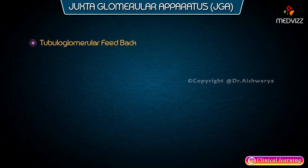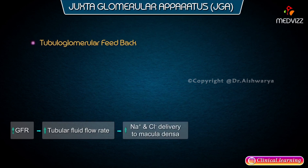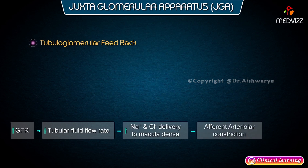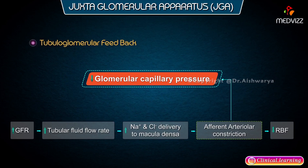Tubuloglomerular feedback: an increase in GFR causes increased tubular fluid flow rate, which leads to increased sodium and chloride delivery to the macula densa. This causes efferent arteriolar constriction, leading to decreased renal blood flow. Efferent arteriolar constriction also causes a decrease in glomerular capillary pressure, which in turn has a negative feedback on the increased GFR.